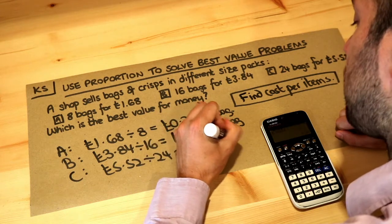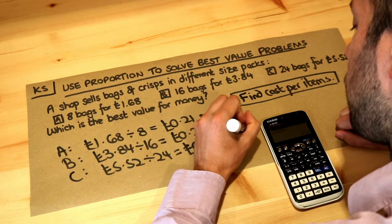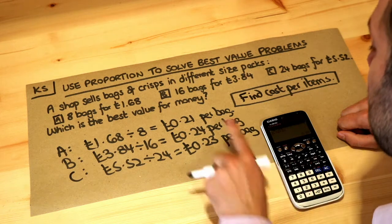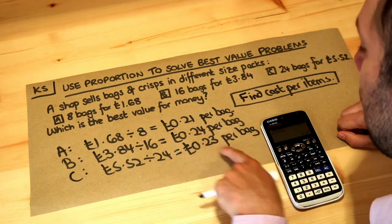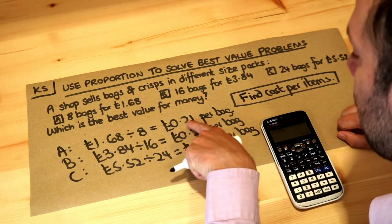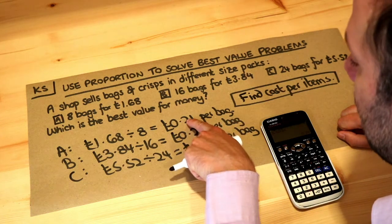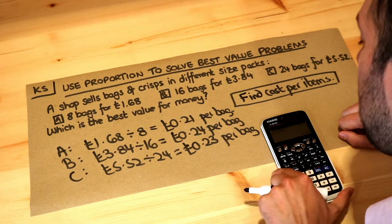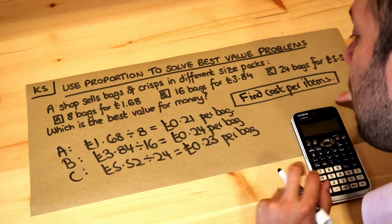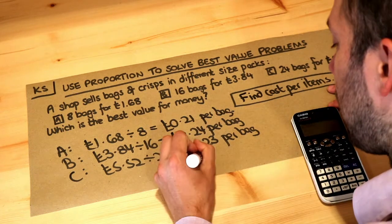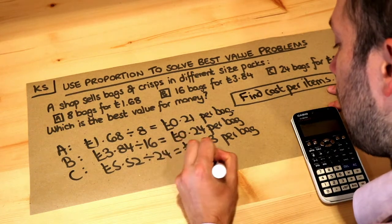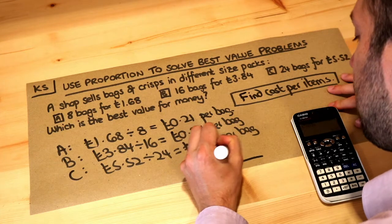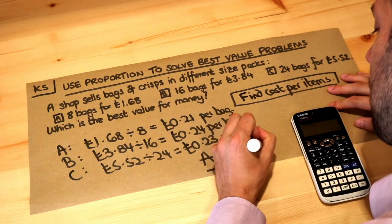So which is the best value? Well, the best value one will be the one where each packet of crisps is the cheapest. We can see that 21p is less than 24p or 23p per bag. So therefore the answer is option A — A is the best value for money.